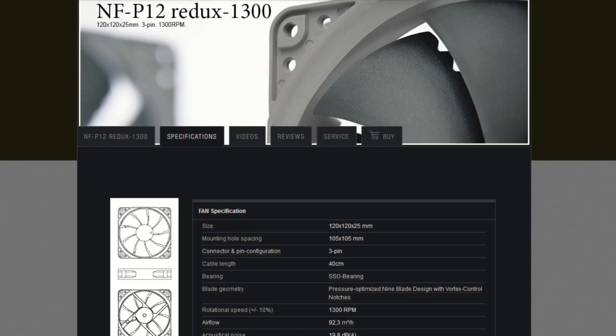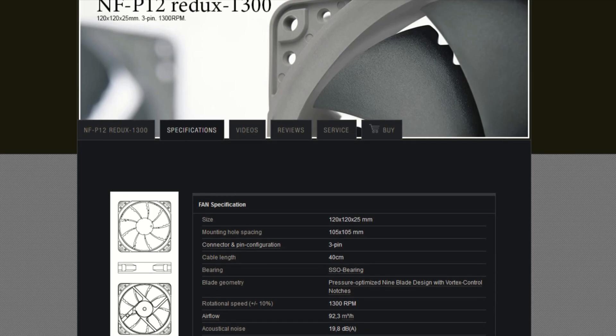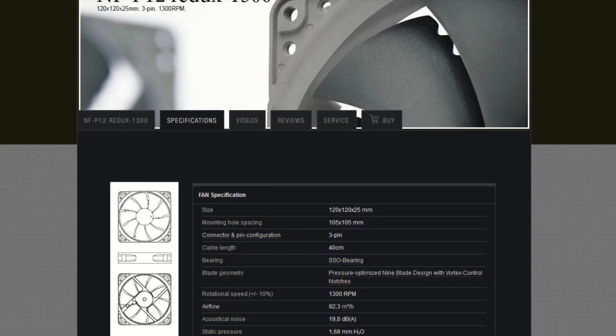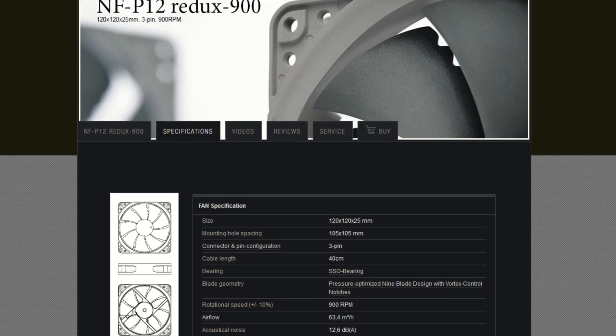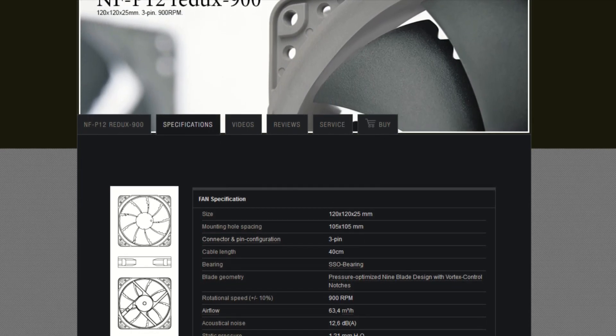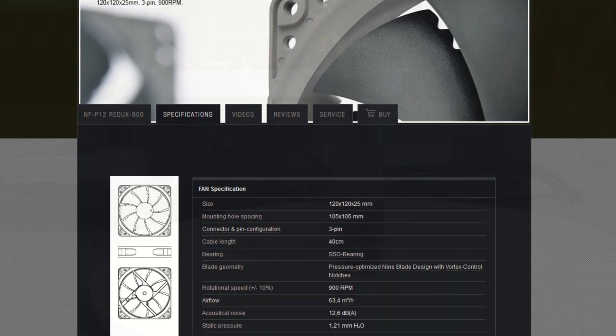There is the NF-P12 1300, which has an RPM of 1300, but only a 3-pin connector. And finally, the NF-P12 900, which has an RPM of 900 and a 3-pin connector.